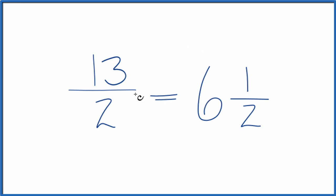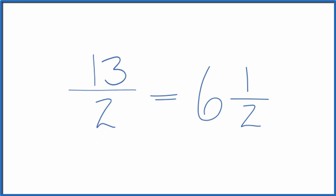These are the same thing — you can check that. 6 times 2 is 12, plus 1, that's the 13. And the 2 matches the denominator. This is Dr. B, and thanks for watching.